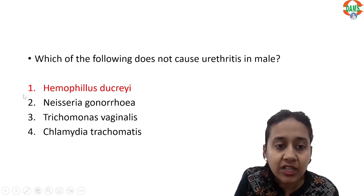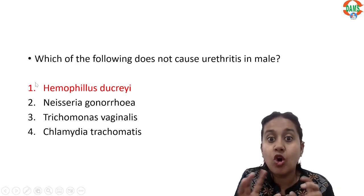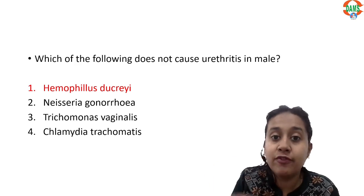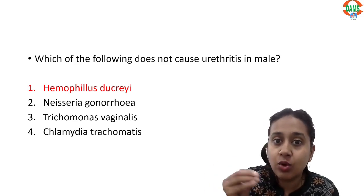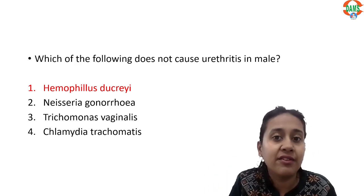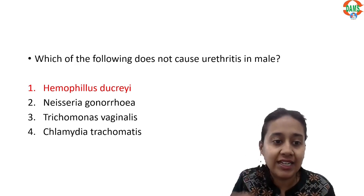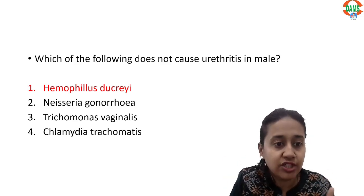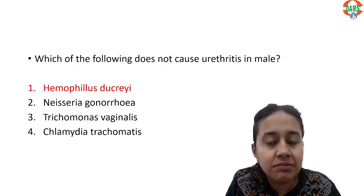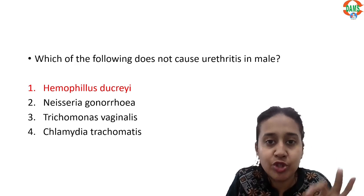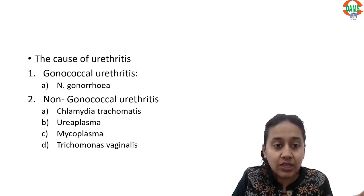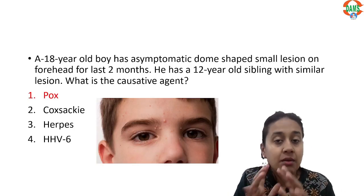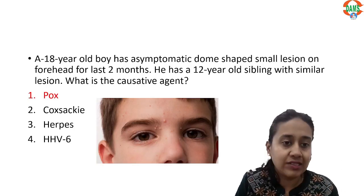Please remember, Haemophilus ducreyi, which is option number one, is the causative agent for painful ulcers on the genitals with associated painful lymph nodes. There is no urethritis in the patient of Haemophilus ducreyi infection. So the answer to this question is option number one. We have two types of urethritis, but Haemophilus ducreyi is not a cause.